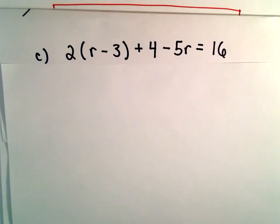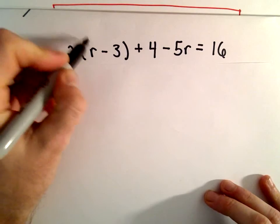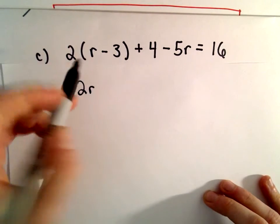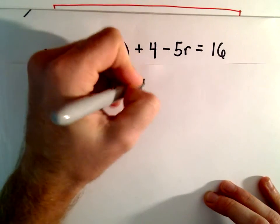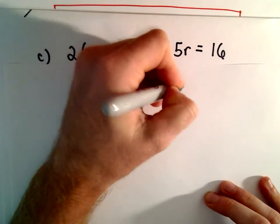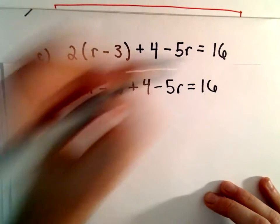So to start off, to get rid of the parentheses, I'm going to distribute. So 2 times r will just be 2r. 2 times negative 3 will be negative 6 plus 4 minus 5r equals 16.